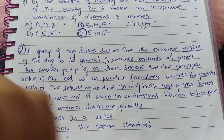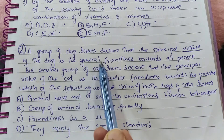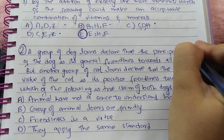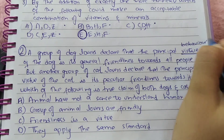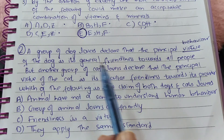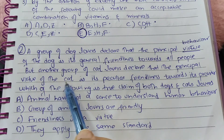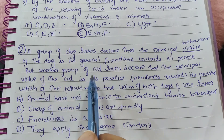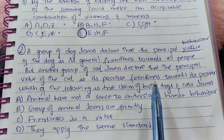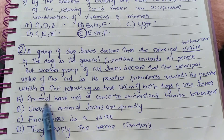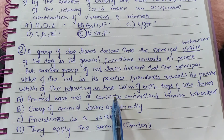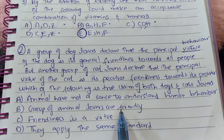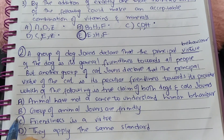Question two of this series: a group of dog lovers declared that the principal virtue of the dog is its general friendliness towards all people. A group of cat lovers declared that the principal virtue of the cat is its specific friendliness towards its provider only. From the options: animals do not understand human behavior — this is false. We cannot generalize that all animal lovers are friendly. The statement 'friendliness is a virtue' is true. So option C is correct.